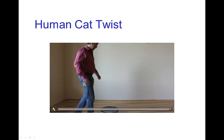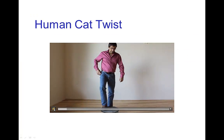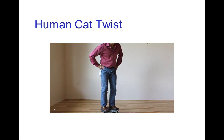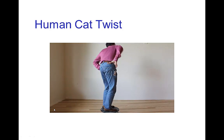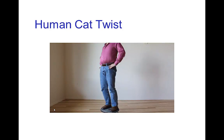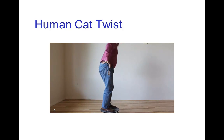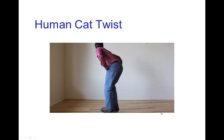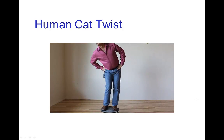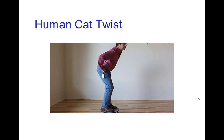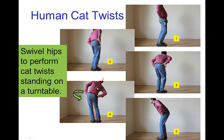Now here I'll show you the similar thing using a rotating platform. I'm not nearly as agile as a cat, so it's not as easy for me to accomplish the same thing, but there you see the rotation. I angle the body, rotate the upper and lower halves in that direction, and the whole body rotates.